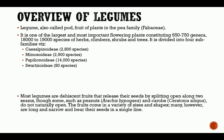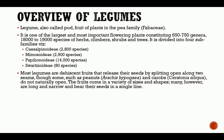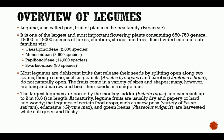Most legumes have dehiscent fruits that release their seeds by splitting open along two seams. They mostly have a line along which the fruit splits open. Some, such as the peanut and the carob, do not naturally open — you have to open them yourself to get to the seeds inside. The fruits come in a variety of sizes and shapes; many are long and narrow and bear their seeds in a single line. The largest legumes are borne by the monkey ladder and can reach up to two meters in length at maturity.